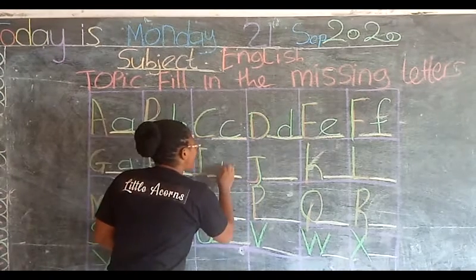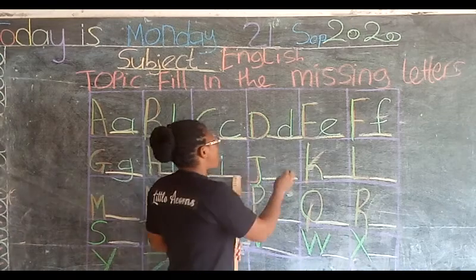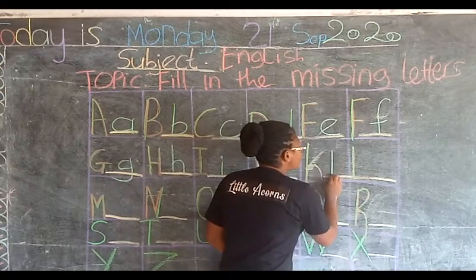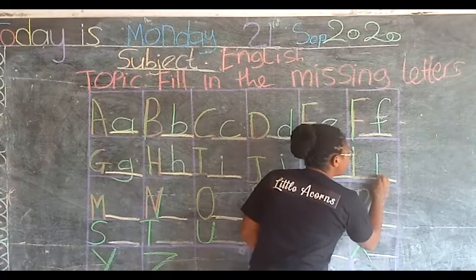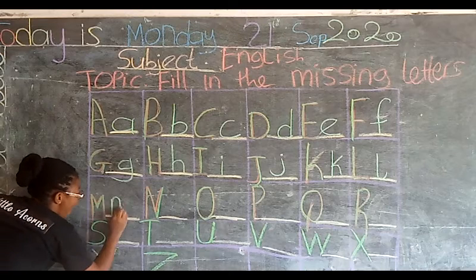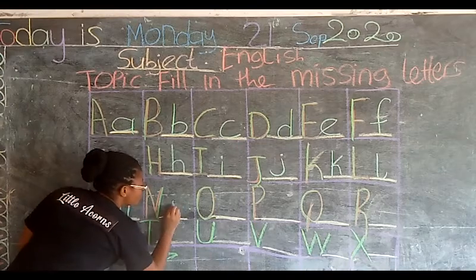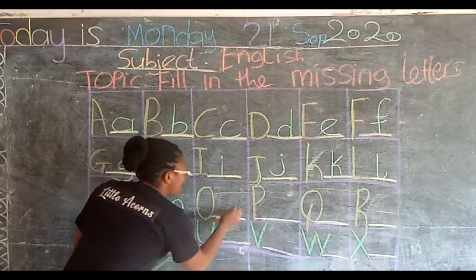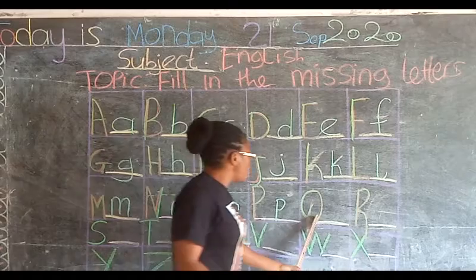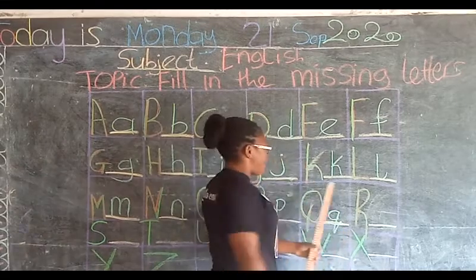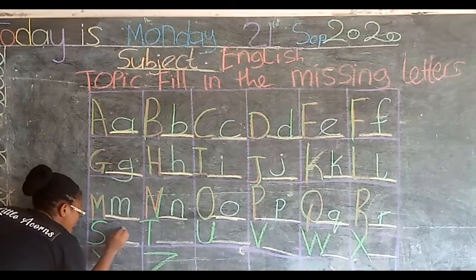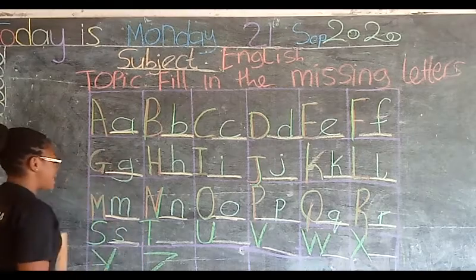Capital I, the lowercase is small i. Capital O, the lowercase is small o. Capital P, the lowercase is small p. Capital Q, the lowercase is small q. Capital R, the lowercase is small r. Capital S, the lowercase is small s. Capital T, the lowercase is small t.